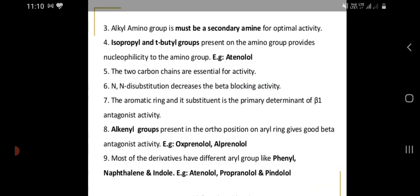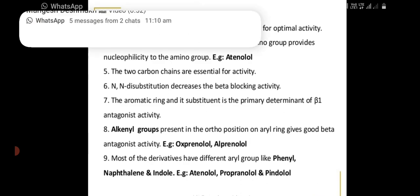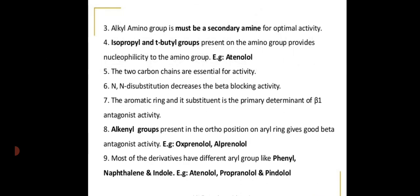The alkyl amino group should necessarily be a secondary amine for optimal activity. Isopropyl and tertiary butyl groups present on the amino group provide nucleophilicity to the amino group — for example, atenolol. The two carbon chains are essential for activity.